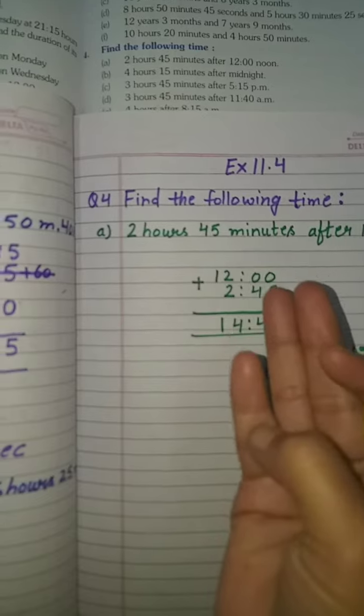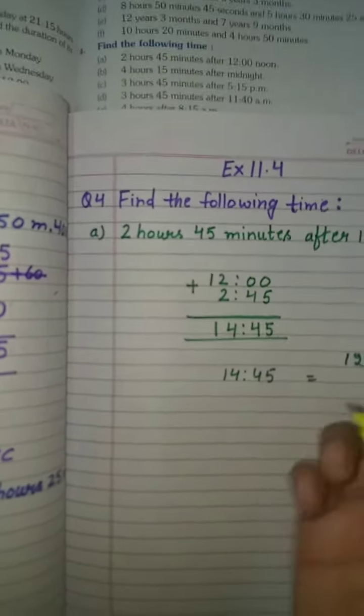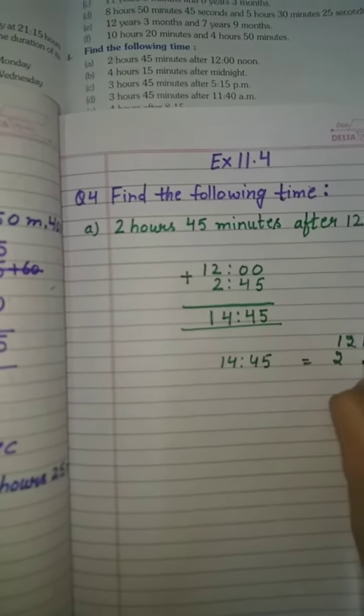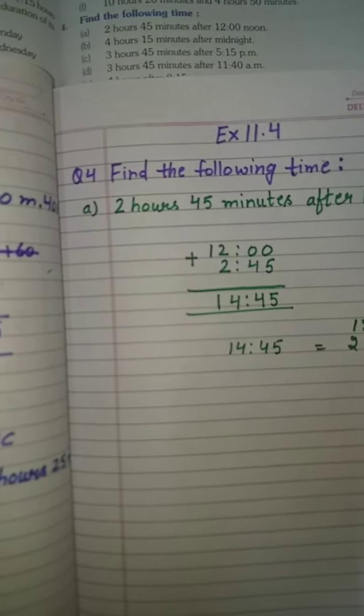12, 13, 14. That means 1, 2. So 2:45 PM.